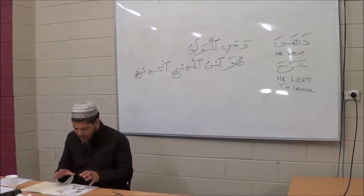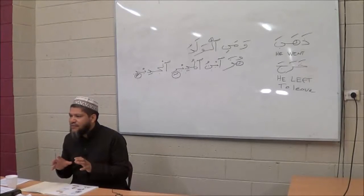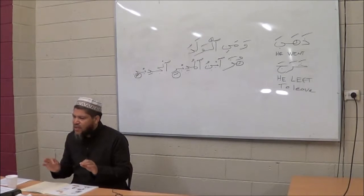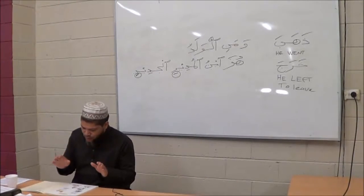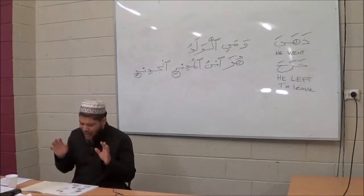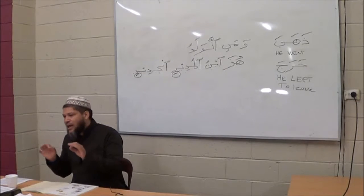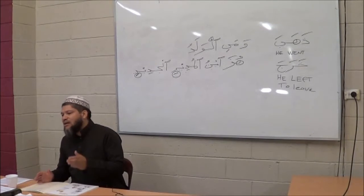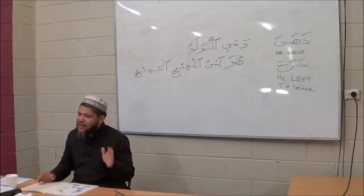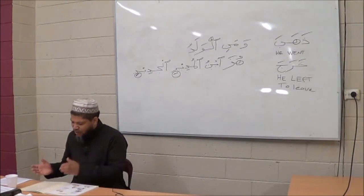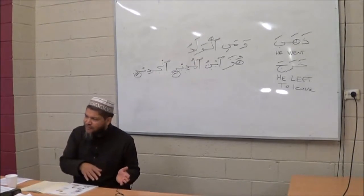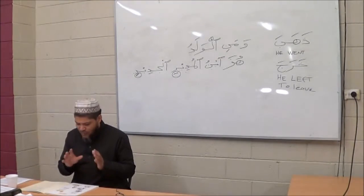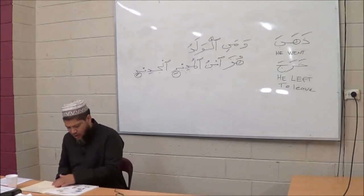Any questions concerning the definite article? Everyone understood? Baytun becomes Al-baytu. Qalamun becomes Al-qalamu. Kitabun becomes Al-kitabu. And Jamalun becomes Al-jamalu. See how it links up with the lessons we are doing on page 65 — definite or indefinite. Inshallah.